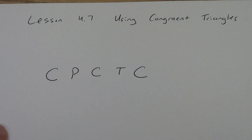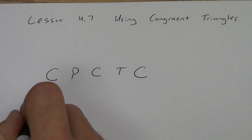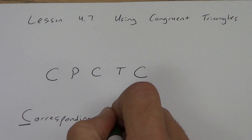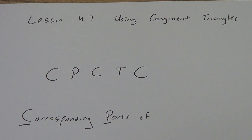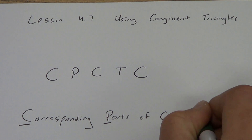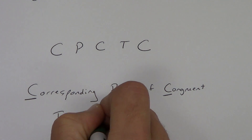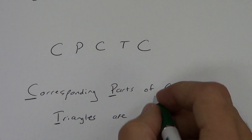The whole lesson is about these five letters right here: C, P, C, T, C. Let me explain what they stand for. The first C stands for 'corresponding.' P stands for 'parts' — corresponding parts of. Now we don't really have an O, kind of like how we say USA instead of USOA. The next C stands for 'congruent.' The T stands for 'triangles.' And then there's another little word that doesn't get a letter: 'are.' Corresponding parts of congruent triangles are congruent.